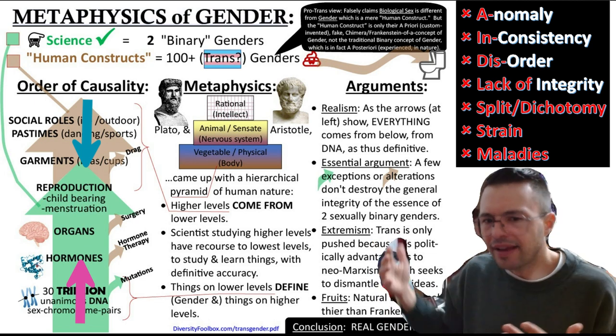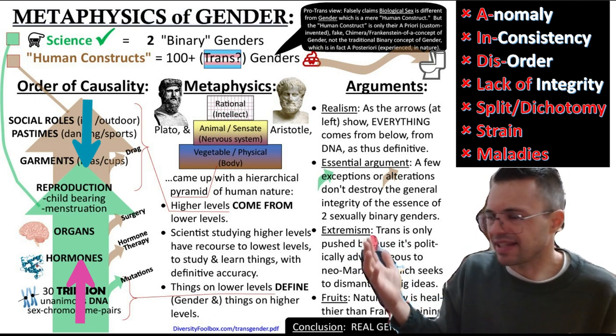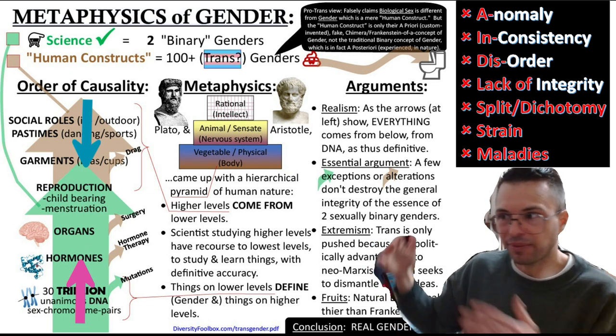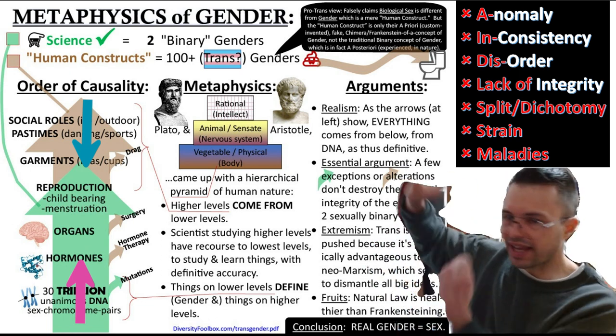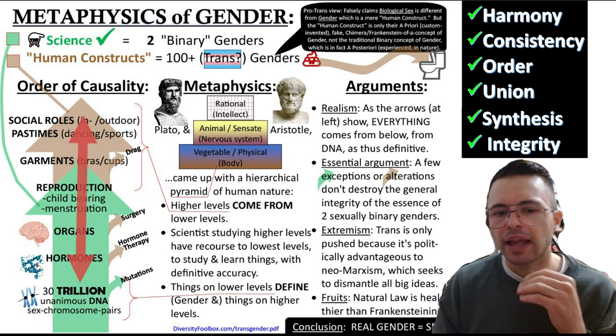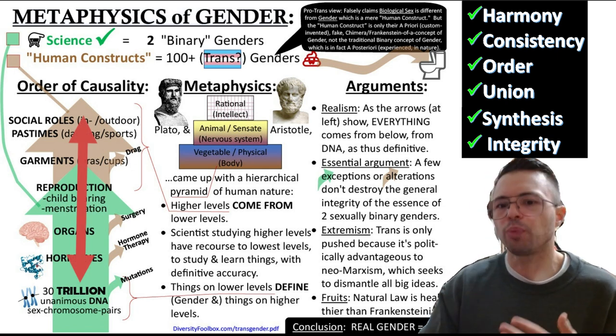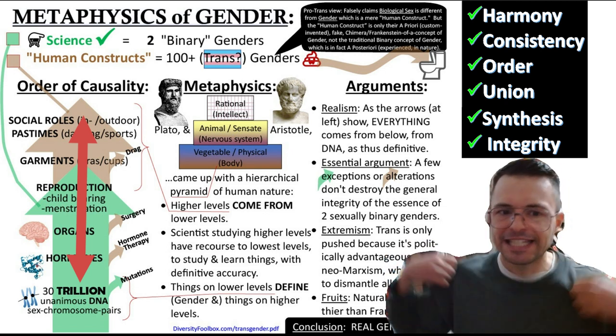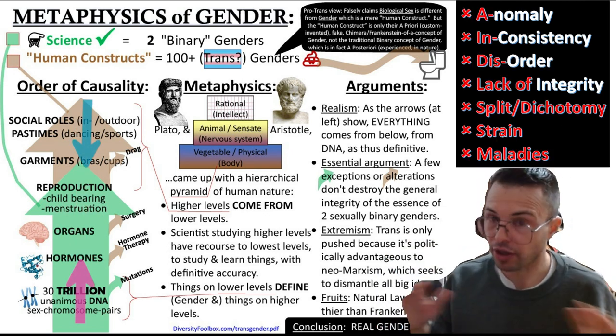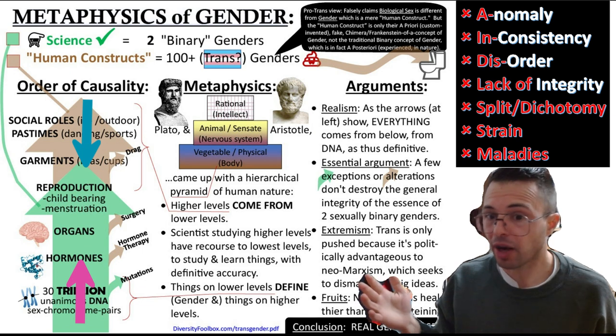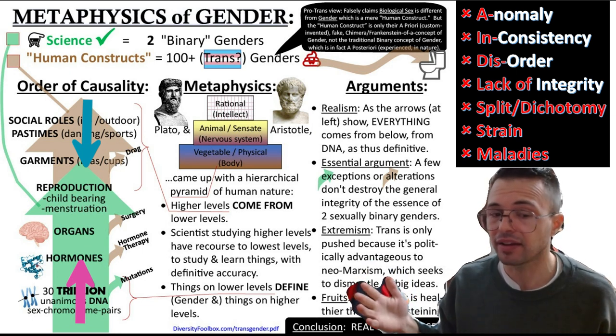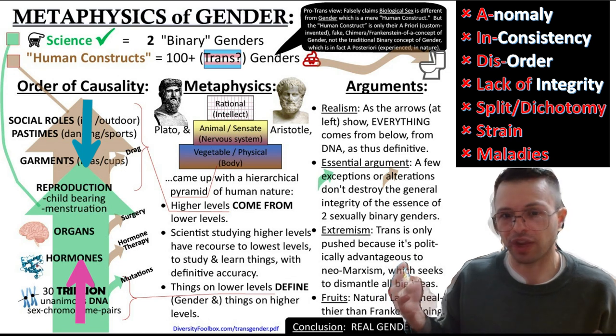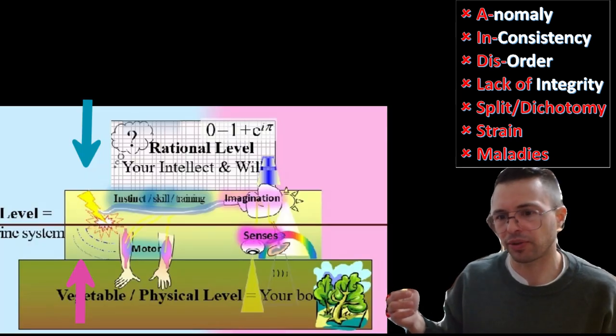If they aren't, then it's an anomaly, an inconsistency, a disorder, a lack of integrity, perhaps even a two-part split or dichotomy. A being which is well interunited with itself will be a true synthesis and display the virtue of integrity. But beings which are not self-united, not harmonious, not consistent, they will experience great psychological or physical strain.